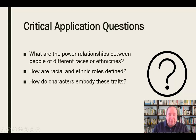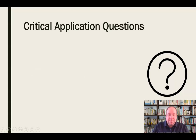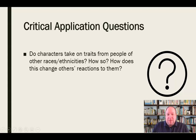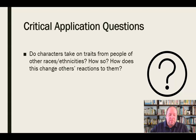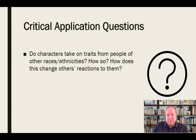How are characters of different racial and ethnic backgrounds portrayed and embodied in this work? Do characters take on traits from people of other races or ethnicities — are people of color given attributes more common to white people, or vice versa? And how does that affect the way they interact with others and the relationships that exist within that artifact?